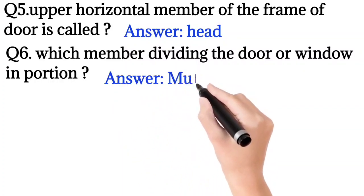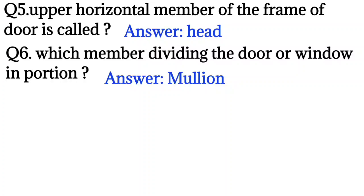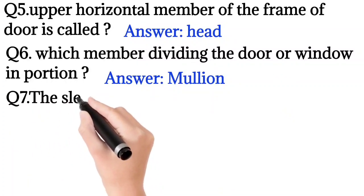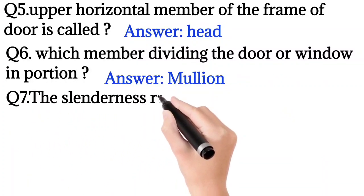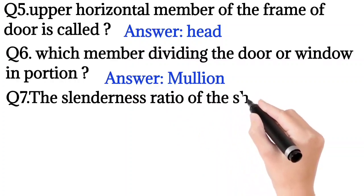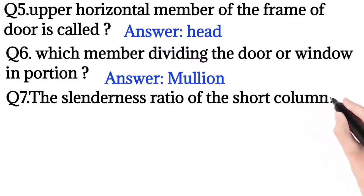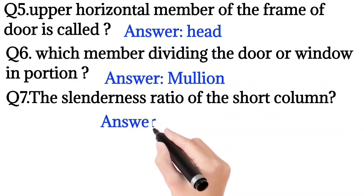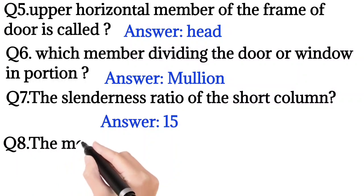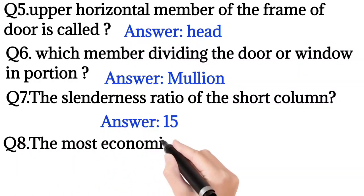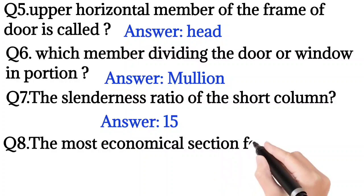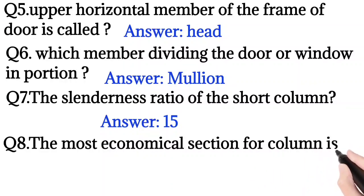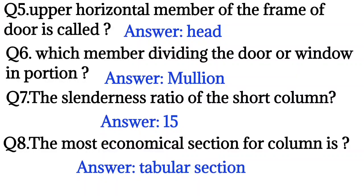Question number 6: Which member dividing the door or window in portions? So the answer is mullion. Question number 7: The slenderness ratio of the short column is? So the answer is 15. Question number 8: The most economical section for a column is? So the answer is tubular section.